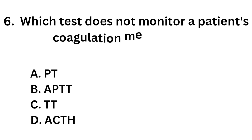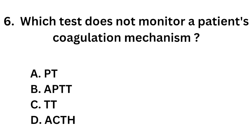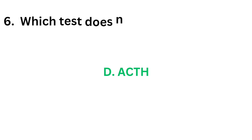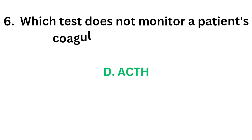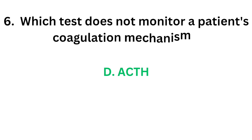Question number 6. Which test does not monitor a patient's coagulation mechanism? Option A: PT. Option B: APTT. Option C: TT. Option D: ACTH. The correct answer is Option D, ACTH. ACTH is a hormone; it is not a coagulation test.